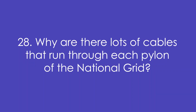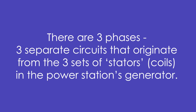Question 28: Why are there lots of cables running through each pylon in the national grid? It's because there are three phases — three separate circuits originating from the three sets of stators or coils in the power station's generator.